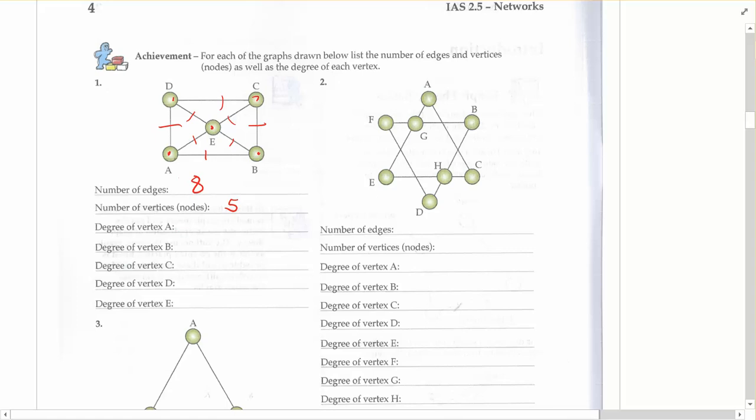So the degree of vertex A, remember that's how many things actually stick into it. So that's going to be three.